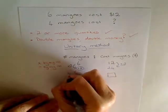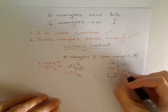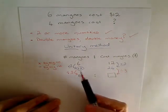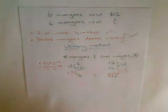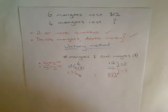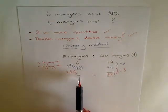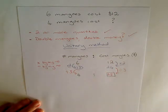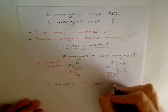My next step is to divide by 3, because that's how I get the cost for 4 mangoes. Whatever you do to one side — doubling, halving, multiplying, dividing — you must perform the same operation on the other side to keep things in proportion. A third of 12 is 4, and 24 divided by 3 is $8. So the final line: 4 mangoes will cost $8.